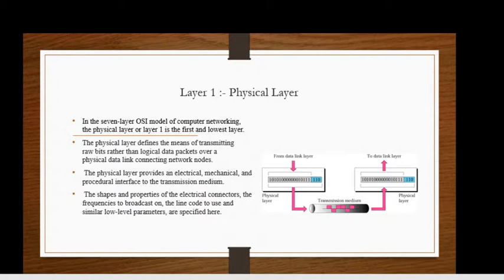It provides an electrical, mechanical, and procedural interface to the transmission medium. The shapes and properties of the electrical connectors, the frequencies to broadcast on, and the line code to use and similar lower layer parameters are specified in this particular layer.